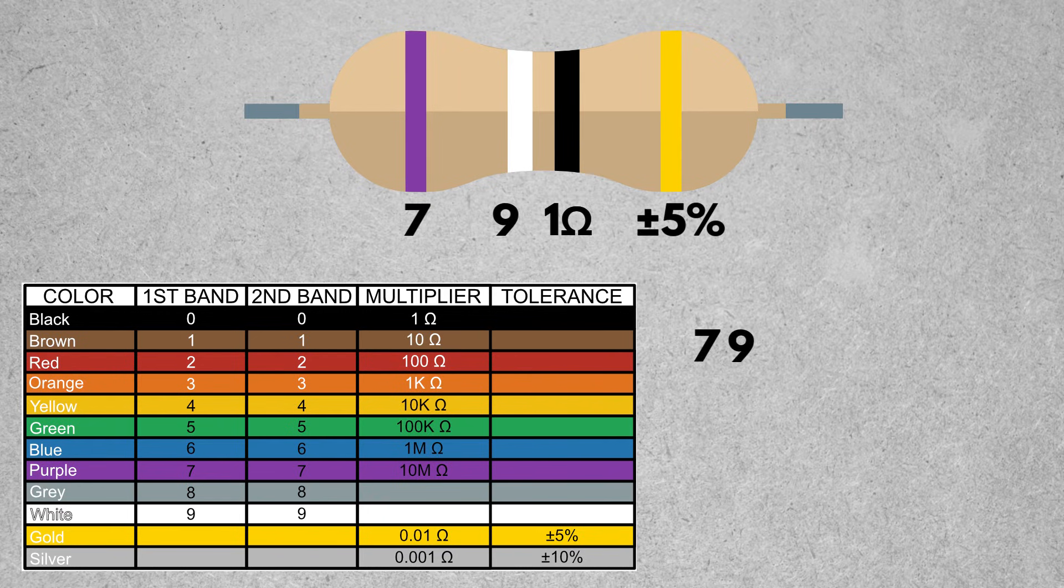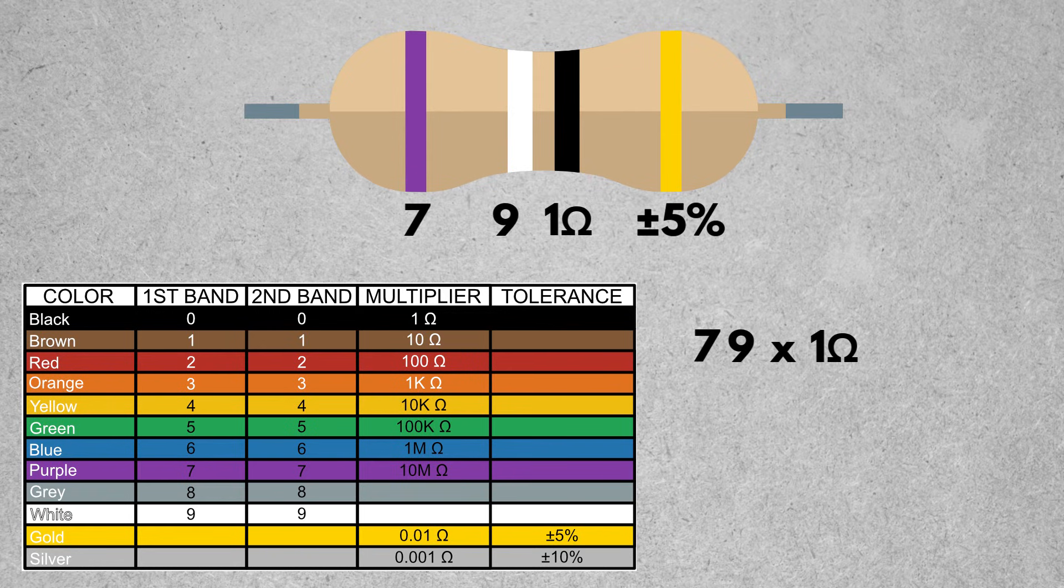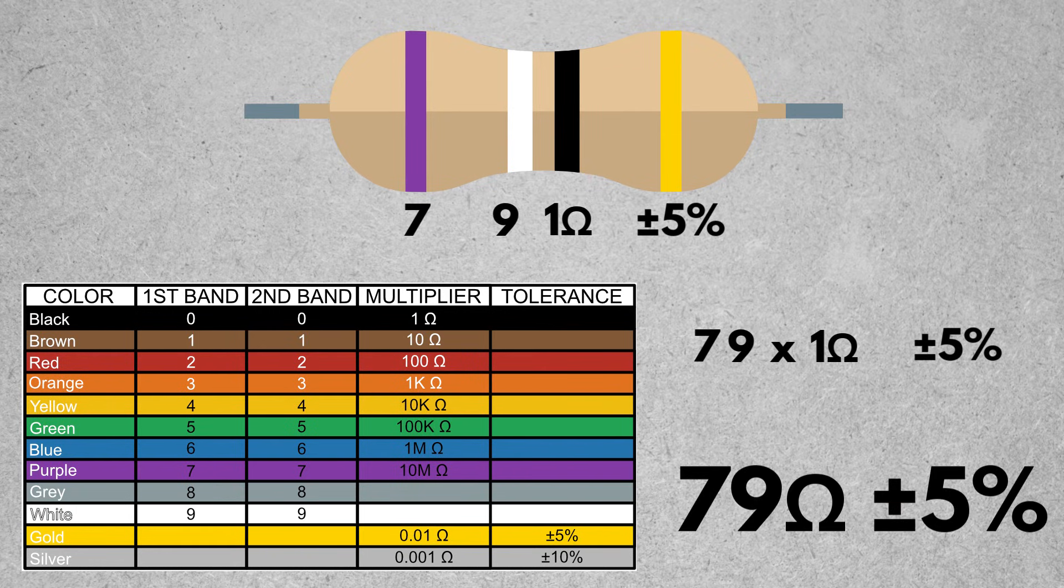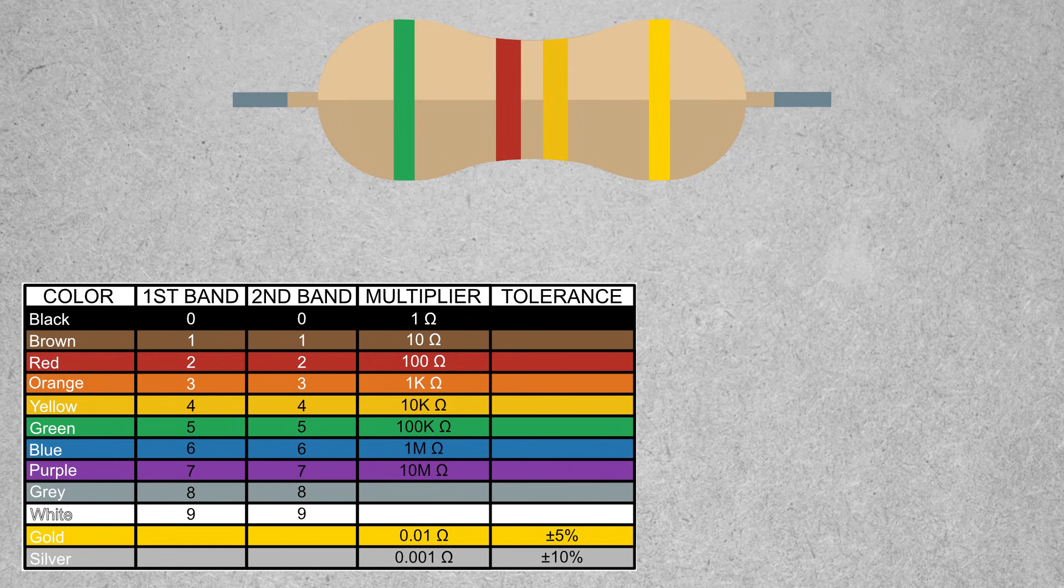When we go to add those up, we have a 7, 9, so 79 times 1 is still going to give us 79 ohms of resistance, plus or minus 5%. In our final example, we have green, red, yellow, and gold. I'm going to give you a moment to go through and try to get those numbers.